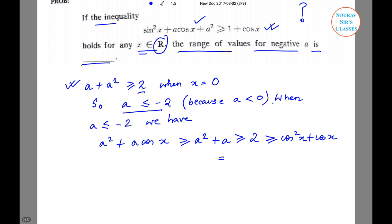Now this can be rewritten as: this equals 1 + cos x - sin²x. This particular thing is equal to this. That is sin²x. Now we will be working with this. So sin²x + a cos x + a² ≥ 1 + cos x.